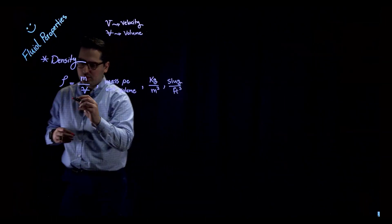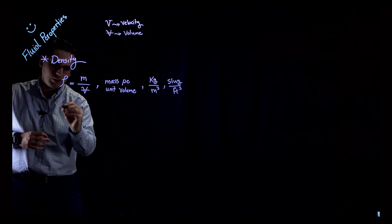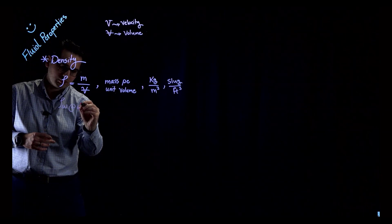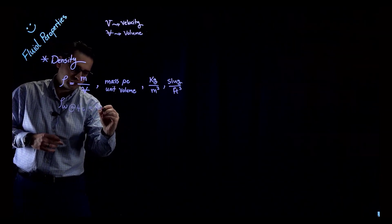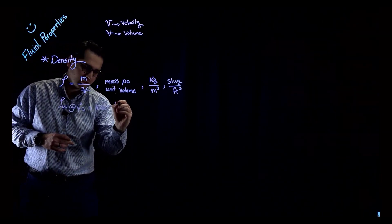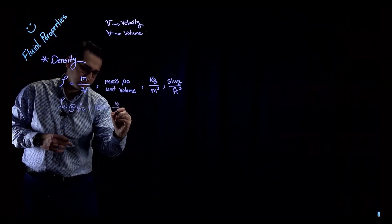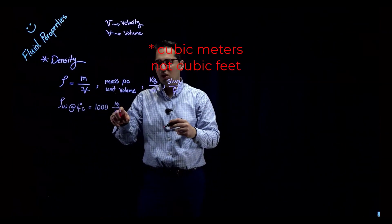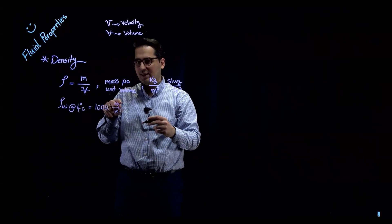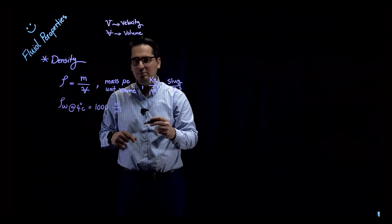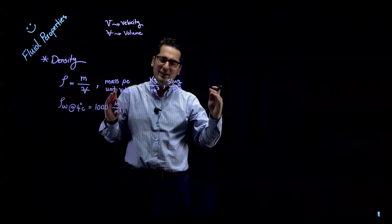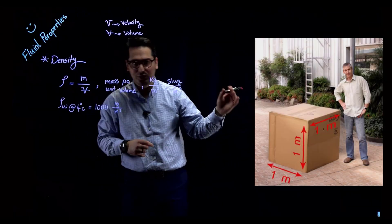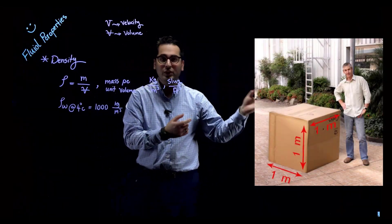For example, the density of water at 4 degrees Celsius is 1000 kilograms per cubic meter. This means that one cubic meter of water has a mass of 1000 kilograms. It's sometimes difficult to visualize how big one cubic meter is, so I have a photo here for you to take a look at.